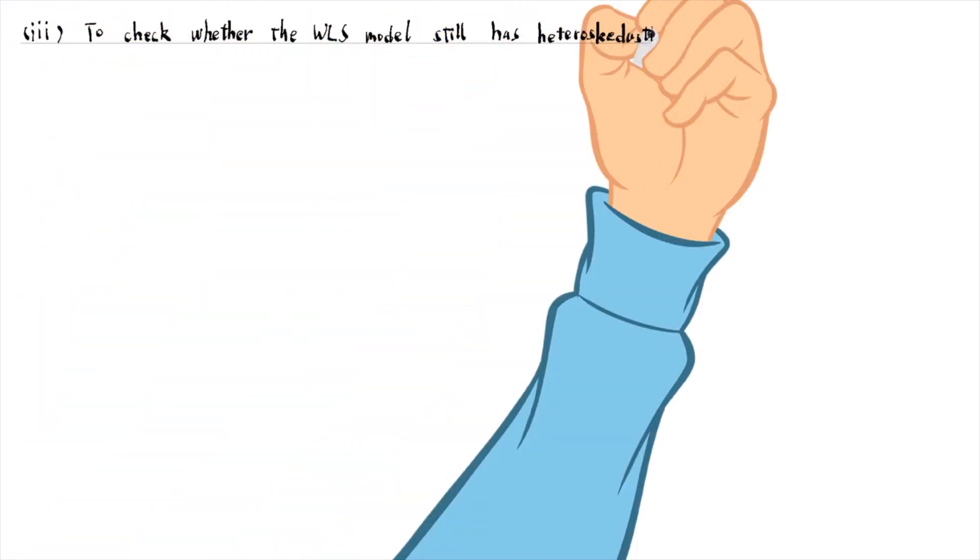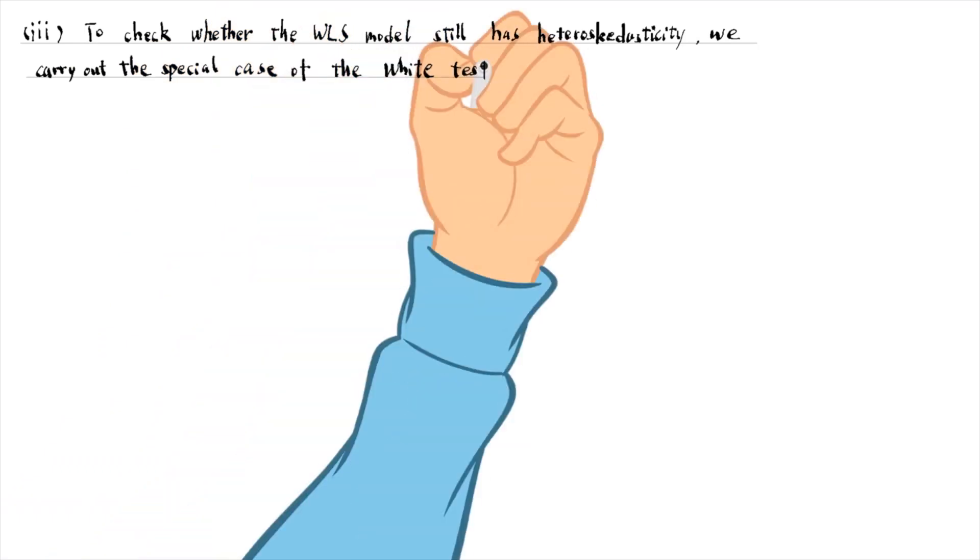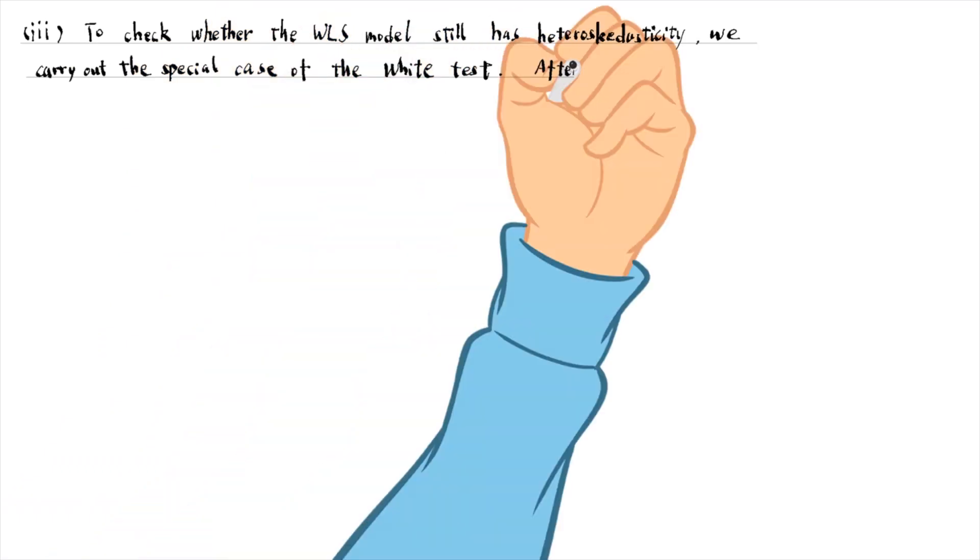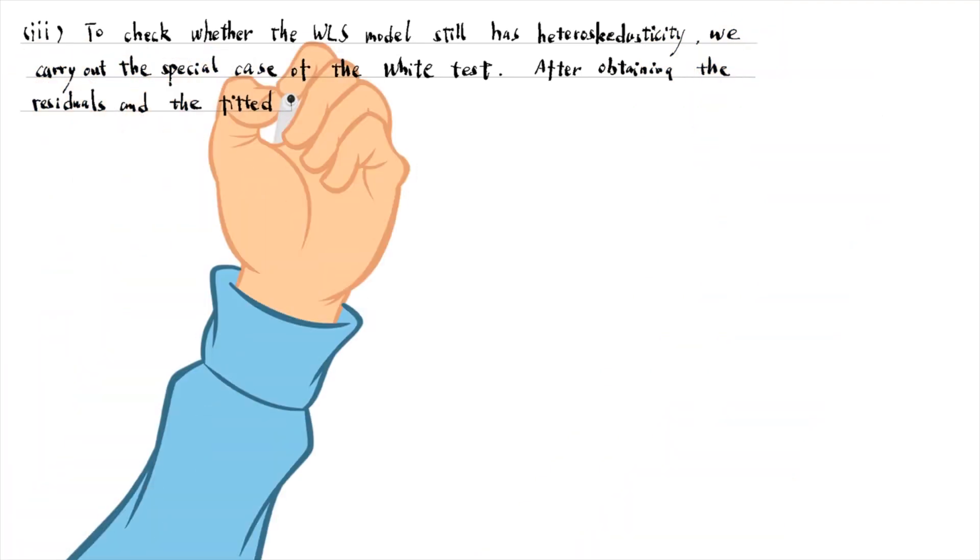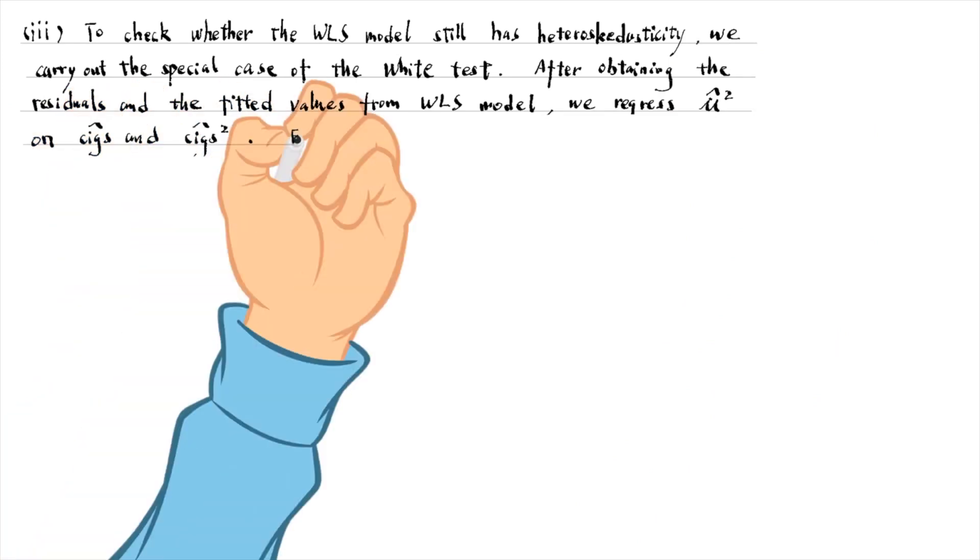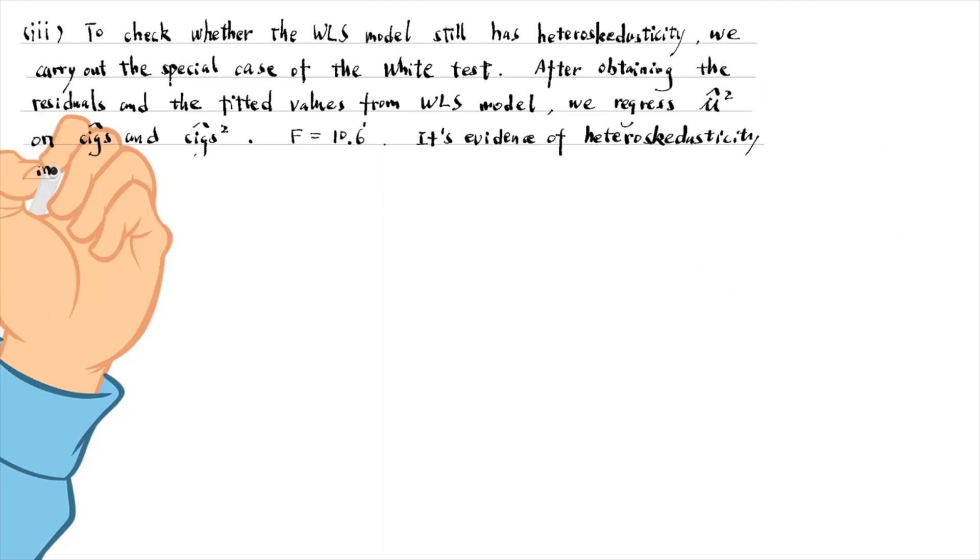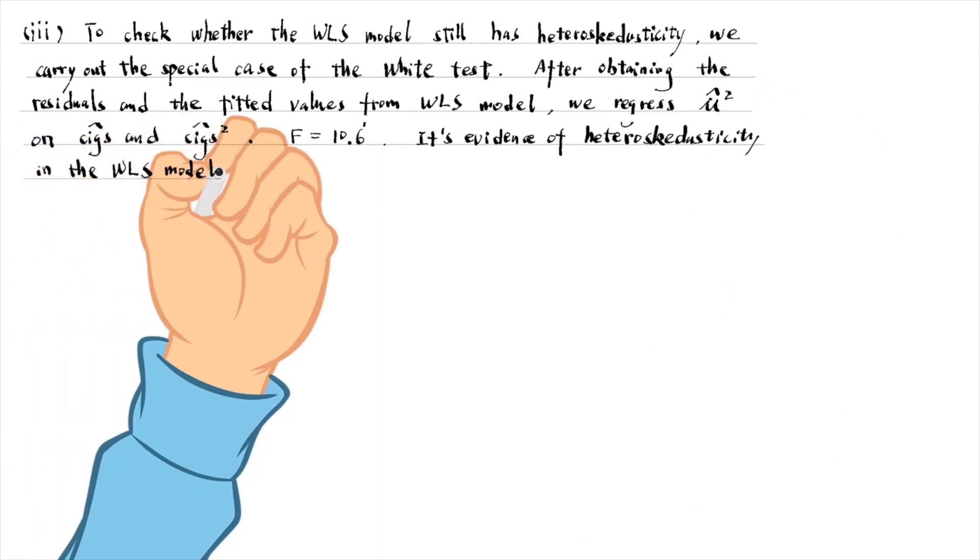In part 3, to check whether the weighted least squares model still has heteroscedasticity, we carry out the special case of the White test. After obtaining the residuals and fitted values from the weighted least squares model, we regress the squared residuals on the fitted values and the squared term. The special case of the White test gives an F statistic of 10.6. It is evidence of heteroscedasticity in the weighted least squares model.